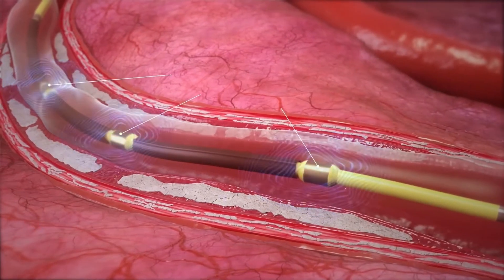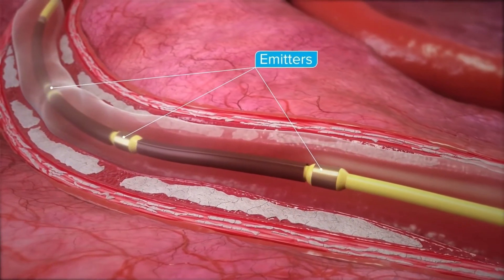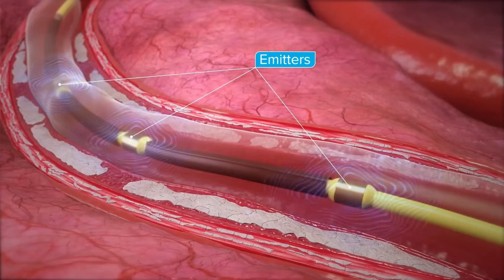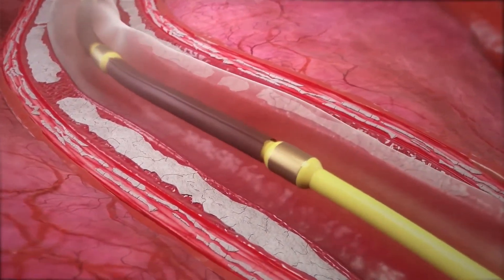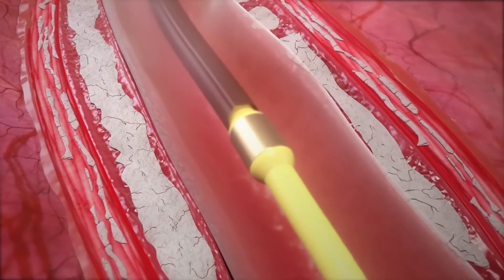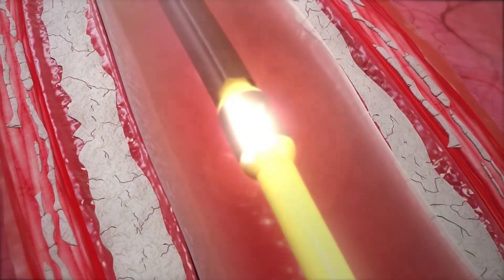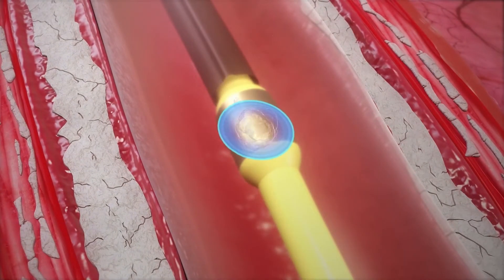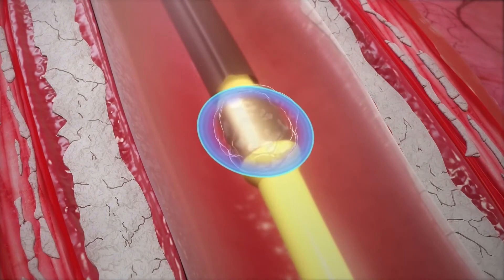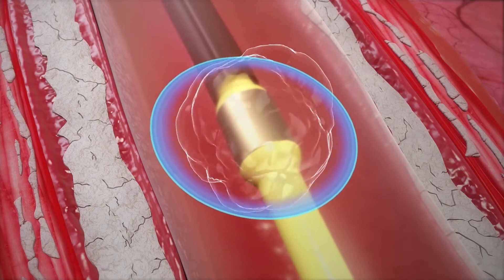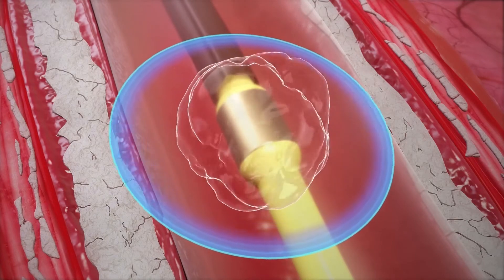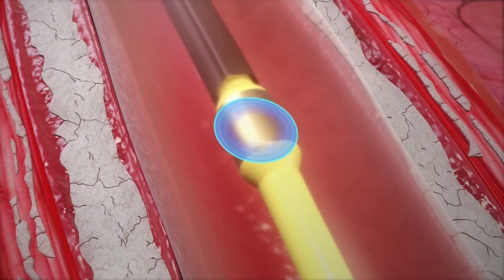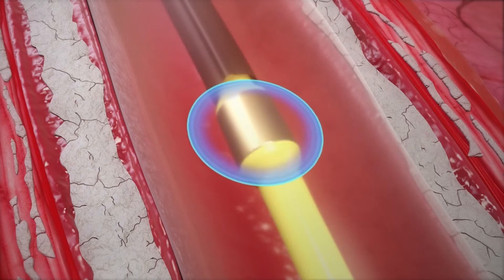To create an IVL shock wave, a series of emitters are arrayed within a balloon angioplasty catheter. The emitters fire electrical impulses across electrodes, which result in a plasma discharge, creating a vapor bubble that rapidly expands spherically, creating the initial shock wave. When the vapor bubble collapses, secondary smaller shock waves are created.